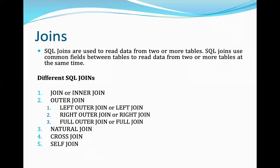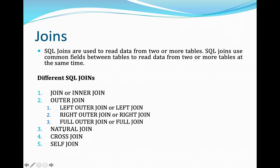That particular relationship will be queried with the help of a join operation. When we want both tables to be involved in any sort of query, we generally use the join operation. Now let's see the different types of joins. We have a simple join or inner join, then outer join, natural join, cross join, and self join. Depending on the query, we select which particular join to use.